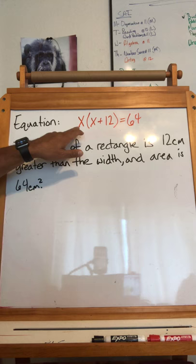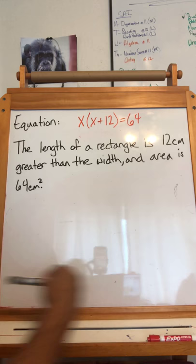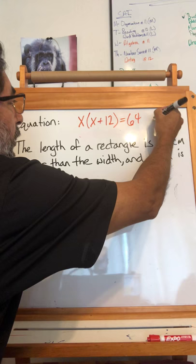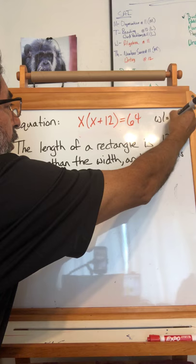So this is our equation up here, I wrote it down. It's going to be x times x plus 12 equals 64, and that's because width times length equals area, that's what we base it on.